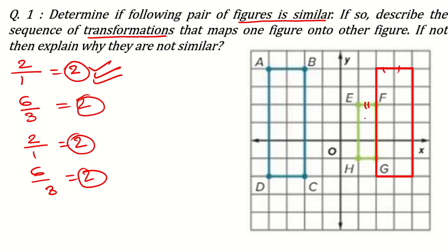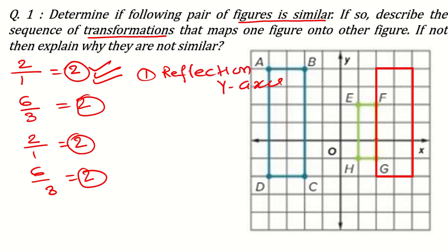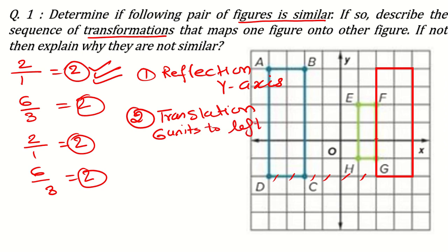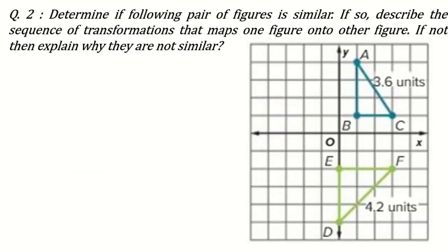Earlier the width was 1, now it is 2; earlier one side was 3, now it is 6 — every side is doubled. Now you can see you have 2 ways to transform. The distance from the y-axis is the same on both sides, so one type of transformation can be reflection in the y-axis. Another type of transformation can also be translation — shift 6 units to the left, no need to go up or down since they are on the same horizontal line.